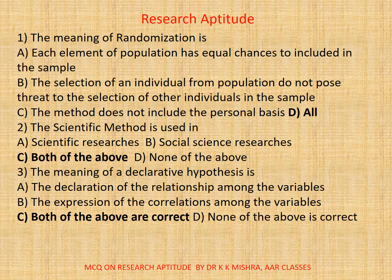Question number 1. The meaning of randomization is: a. Each element of population has equal chances to be included in the sample. b. The selection of an individual from population does not pose threat to the selection of other individuals in the sample. c. The method does not include the personal bias. d. All. The correct option is d. All. That is how you can understand randomization.